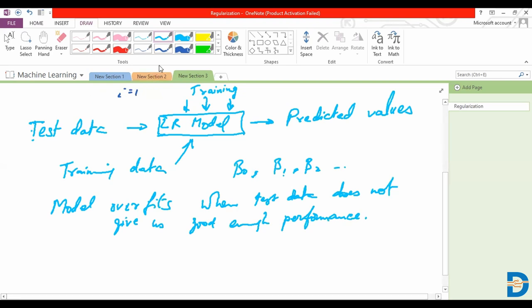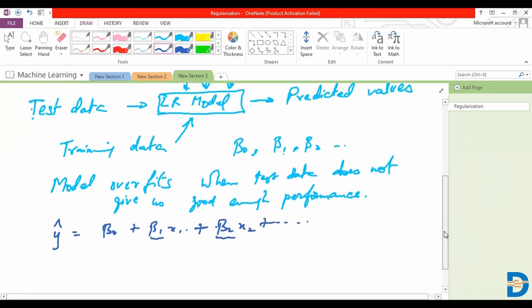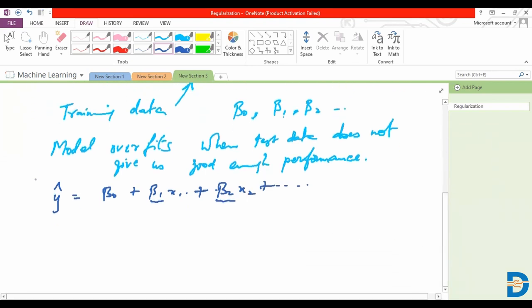And in order to prevent this, what we do is we reduce the coefficients that are given to this predicted value. So we are looking to kind of minimize these coefficients, focus more on those independent variables which have more of an impact on the predicted value, the dependent variable, and reduce the coefficients for where we did not have those kind of high coefficients. So now this is done by basically using a term which is called the shrinkage penalty.